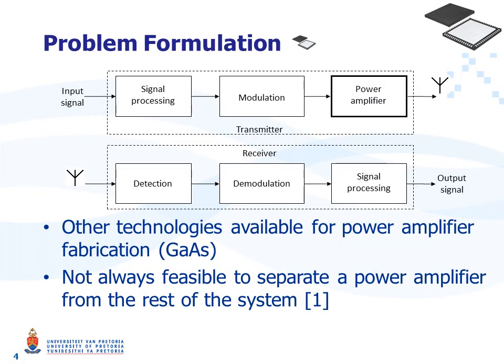The figure in this slide shows a typical transceiver model with the transmitter on the top and the receiver at the bottom. After some signal processing, the input signal can be modulated and amplified in order to be transmitted over a channel. On the receiver side, the same signal is detected from the channel, then demodulated, and after some signal processing, the original signal is recovered. Normally, the block in bold is fabricated in a different technology from the rest of the transceiver system. If the transceiver system is fabricated in a CMOS technology, then a power amplifier would normally be fabricated in the gallium arsenide technology. However, it is not always feasible to separate a power amplifier from the rest of the system, whether from a cost perspective or from the size perspective.